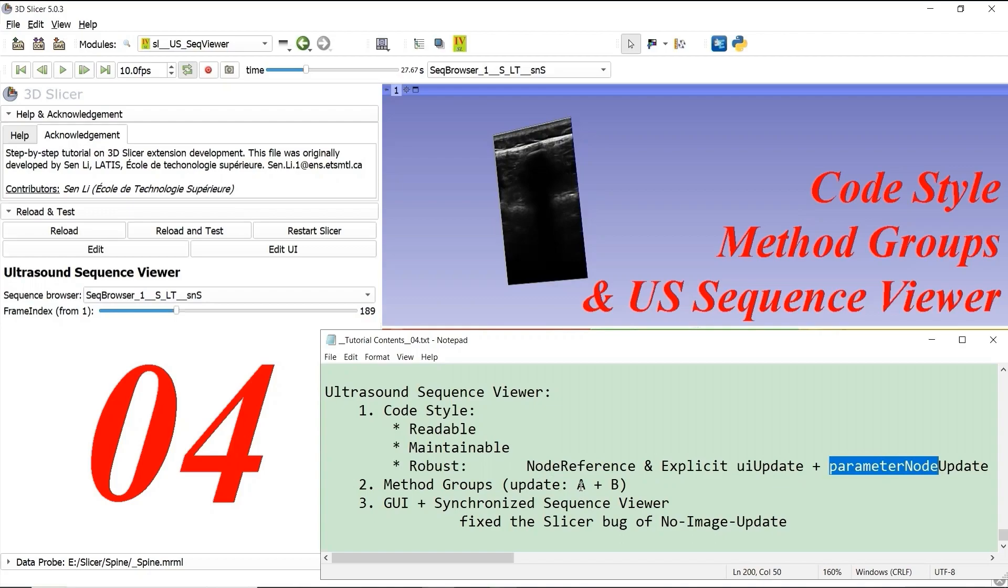Using two groups, group capital alpha and group capital beta, for the update of user interface and parameter node, we can put similar functions together for better code reading and programming. Note that we can connect signal slot when we edit the graphical user interface.